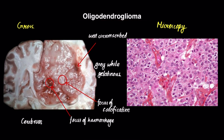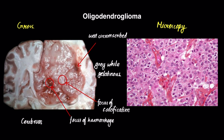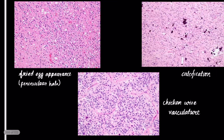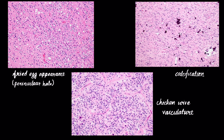Third, we have oligodendroglioma, which is the tumor of oligodendrocytes. It is seen in the white matter of the cerebrum. Grossly, it is well circumscribed with a well-defined border, gray-white in appearance and gelatinous. There are whitish areas showing foci of calcification, and reddish areas showing foci of hemorrhage.